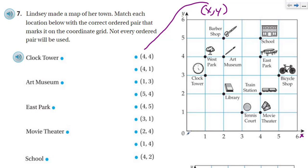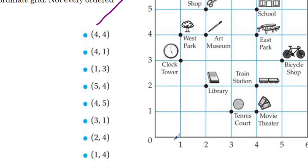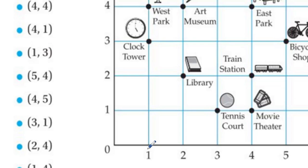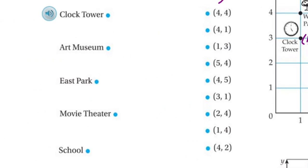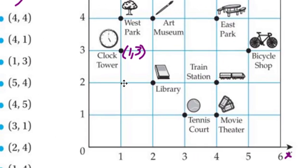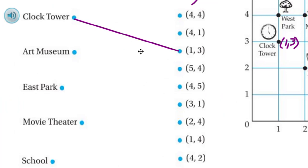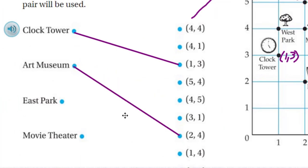For the clock tower, I'm going: okay, here's my one. So that means my coordinate pair is one — x first — and then one, two, three. So the coordinate is going to be one, three. And do we have a one, three? We do, right there. Let's move to the next one — Art Museum. I see the x first is two, and then one, two, three, four. The ordered pair would be two, four. And I see a two, four right here. Note that four, two is a completely different one — four here, and then two — that's actually the train station, and we don't have a train station listed.